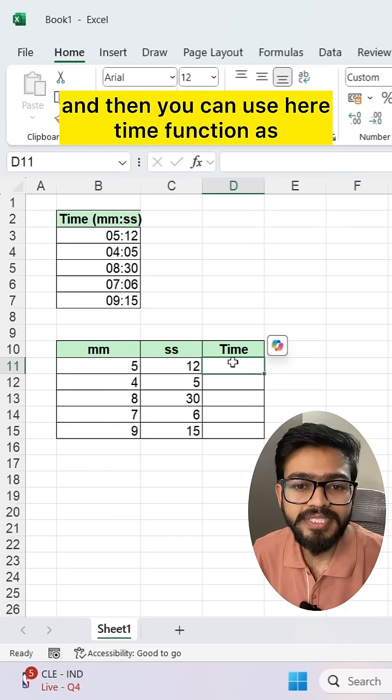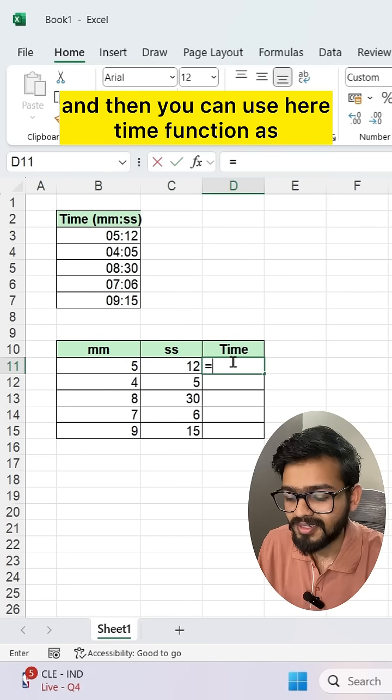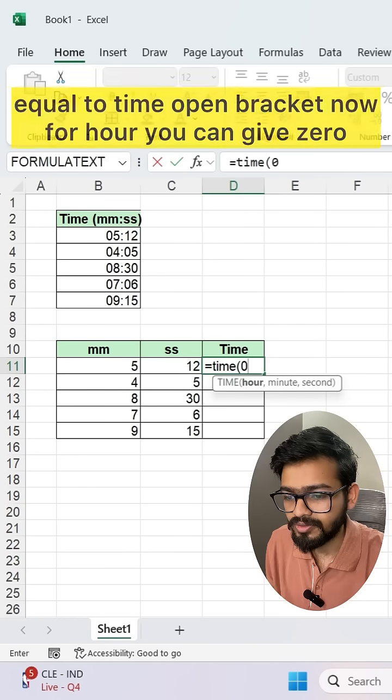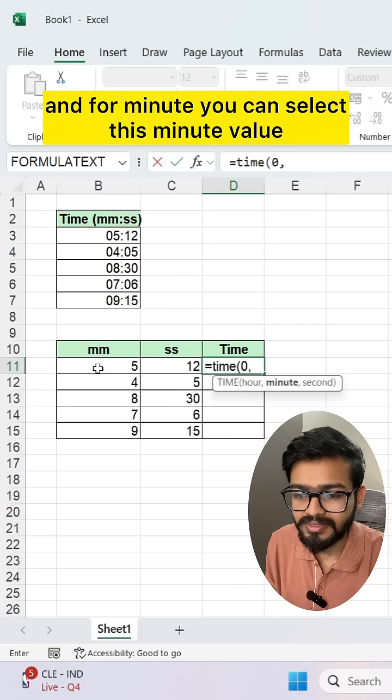And then you can use here time function as equal to time open bracket. Now for hour, you can give zero and for minute, you can select this minute value.